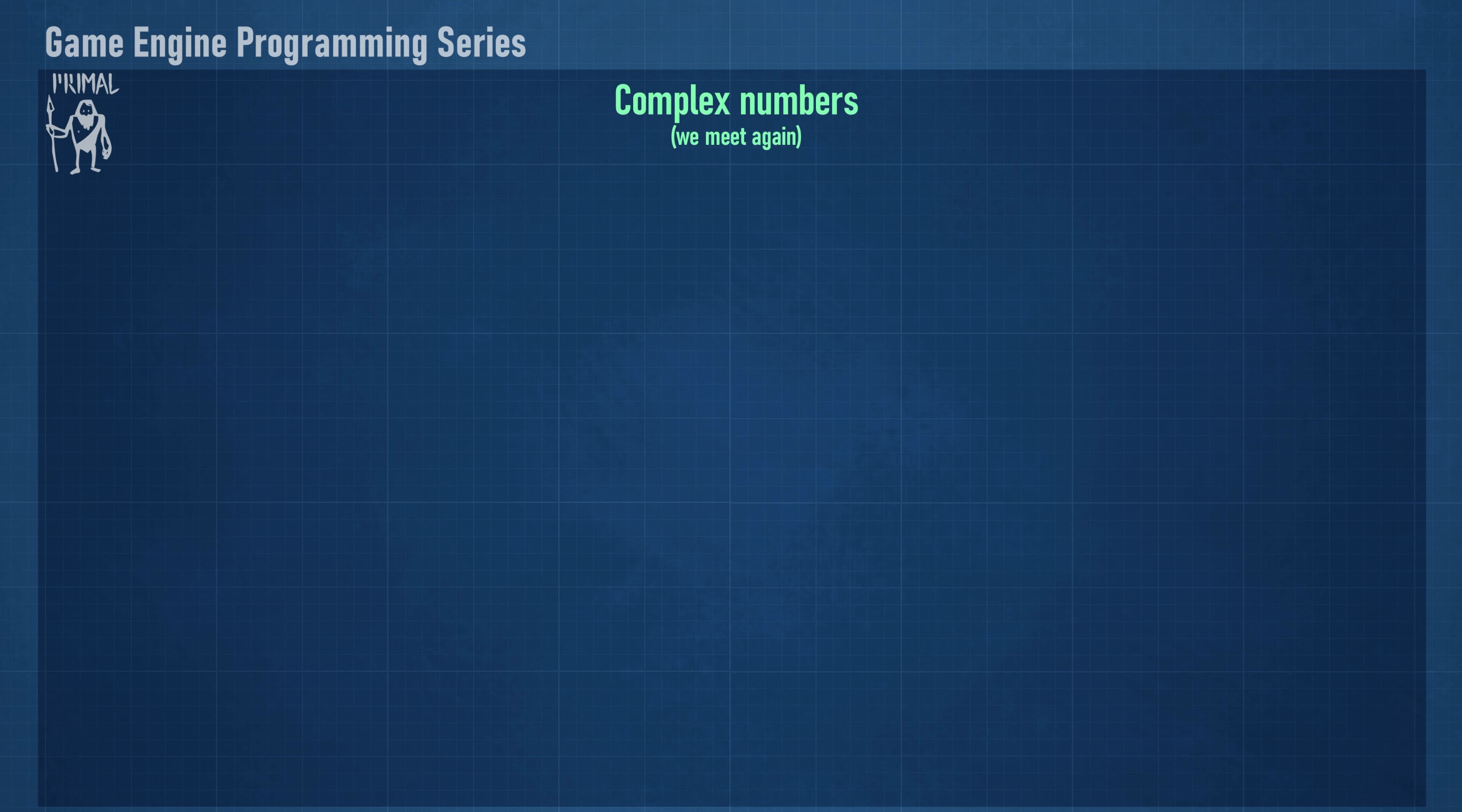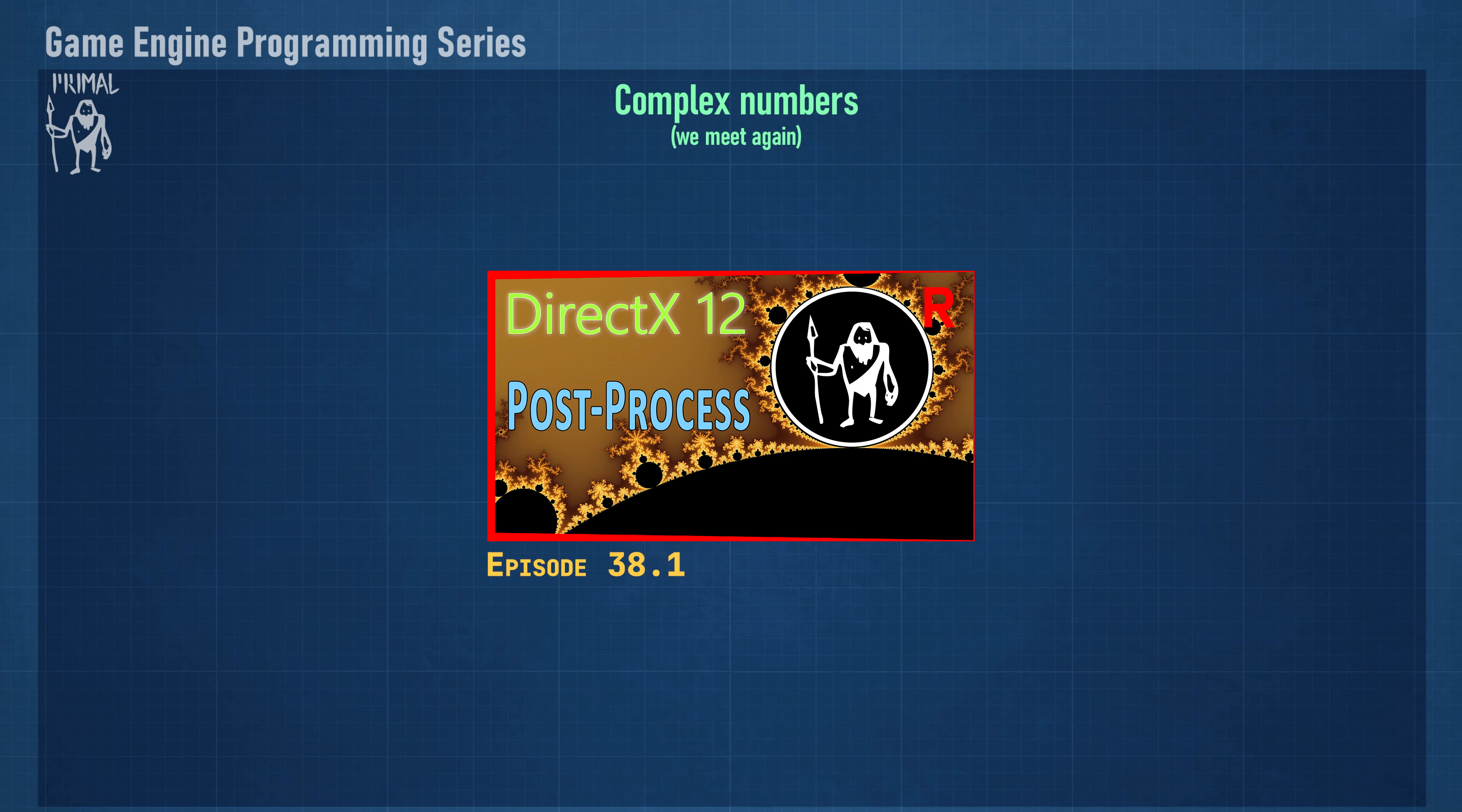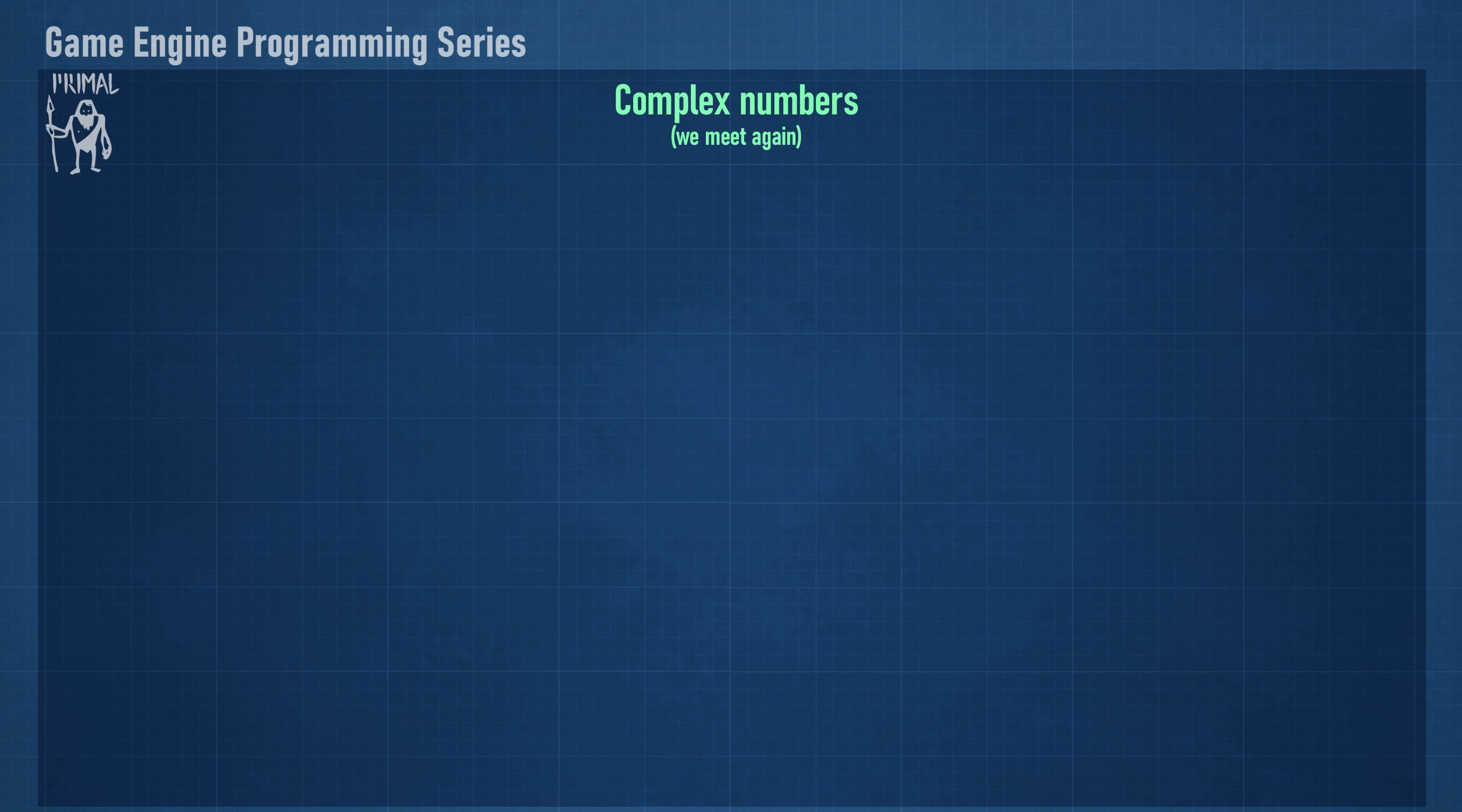Now let's have a look at complex numbers. We already had an encounter with complex numbers when we did the Mandelbrot fractals. Here we'll have a short recap and we'll examine some properties of complex numbers that have to do with rotations. Complex numbers are defined as points on the complex plane consisting of a real axis and an imaginary axis. In most cases, complex numbers are written as a sum of a real number plus an imaginary number. However, we can also write them as a scalar part and a vector part. The vector part is a one-dimensional vector in the direction of the imaginary axis.